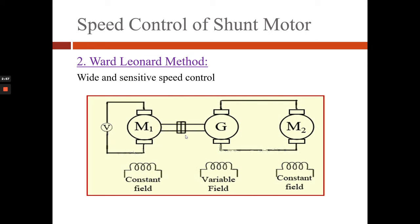Now we will see the Ward Leonard method. This is basically an armature voltage control of a DC motor. The variable armature voltage is obtained from a DC generator. M1 is a fixed-speed DC motor which is mechanically coupled to a DC generator. The output voltage of the DC generator is applied to the armature of DC motor M2, the speed of which is to be controlled. By varying the field current of the DC generator we can obtain a variable DC output voltage, which acts as the variable armature voltage for M2 and its speed can be controlled.